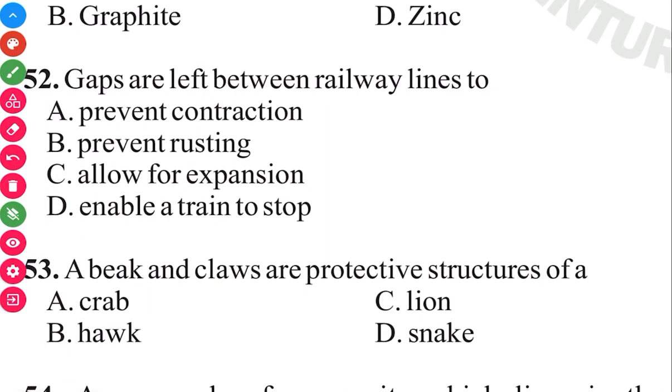Question 53. A beak and claws are protective structures of a hawk. The answer in 3, 2, 1 is a hawk.